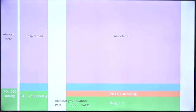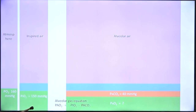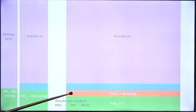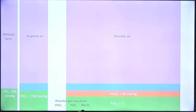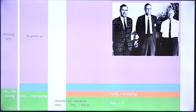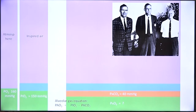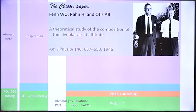The alveolar gas equation tells us that alveolar oxygen equals inspired oxygen minus alveolar carbon dioxide. Carbon dioxide meters are available in the clinical setting but oxygen meters are not, so this gives us a way of estimating alveolar oxygen when we know alveolar carbon dioxide. This relationship was found by Professor Fenn and his group, and that is the publication in which it was first described.